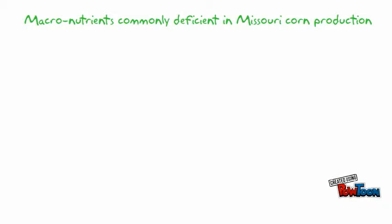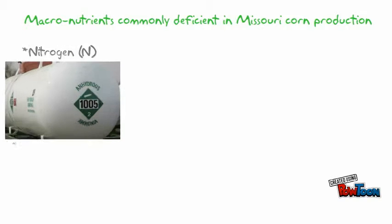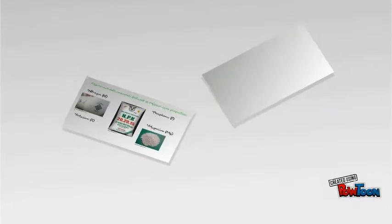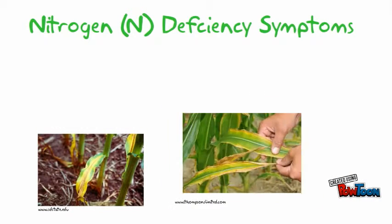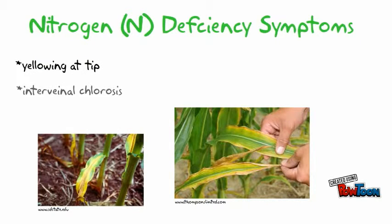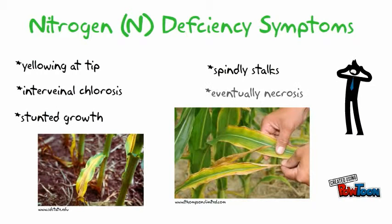The major macronutrients that are typically deficient in Missouri corn production are nitrogen, potassium, phosphorus, and magnesium. Nitrogen is a nutrient that is most likely to be deficient as it is easily leached, volatilized, and made unavailable through nitrification. Nitrogen deficiency symptoms include yellowing at the tip, interveinal chlorosis, stunted growth, spindly stalks, and necrosis in the most severe cases.